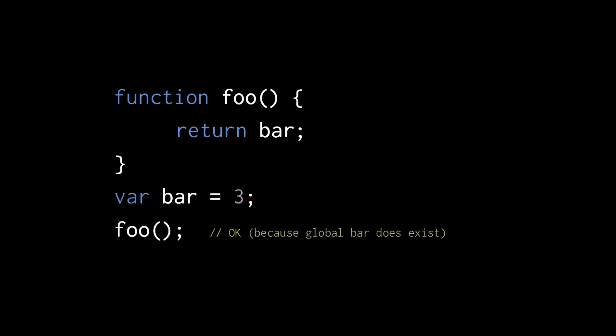Here, though, we create a global bar before calling foo, and so the code runs fine without error. Unsurprisingly, a global must already exist when we try to use it. When functions use globals, though, those globals don't have to exist by the time the function is created, only by the time they are used when the function is called.